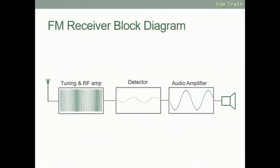Here we have an FM receiver block diagram. The FM signal is received by the antenna, comes into the tuning and RF amplifier to be increased, then into the detector which detects the audio within the signal, which feeds into the audio amplifier, which increases the audio and throws it out of the speaker.